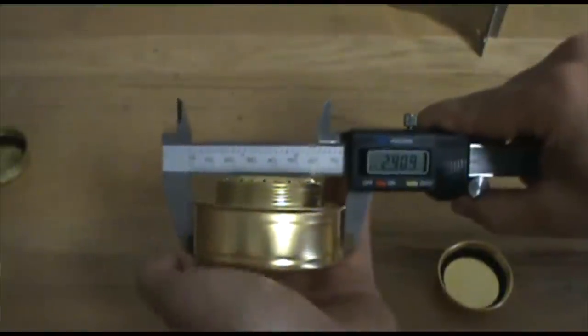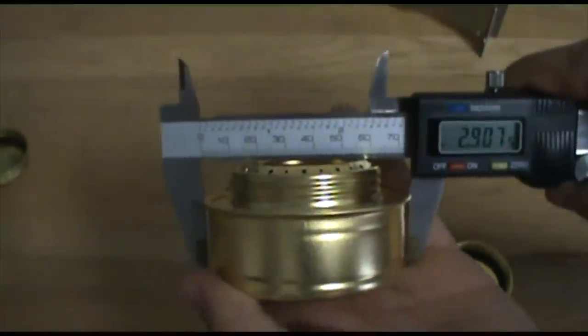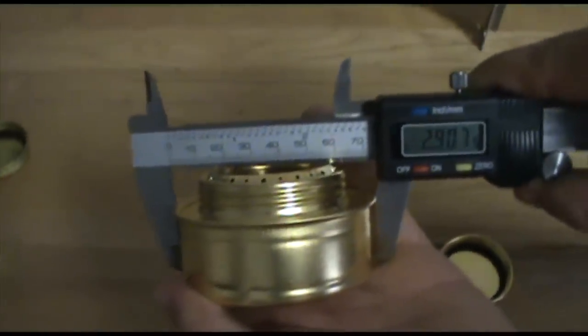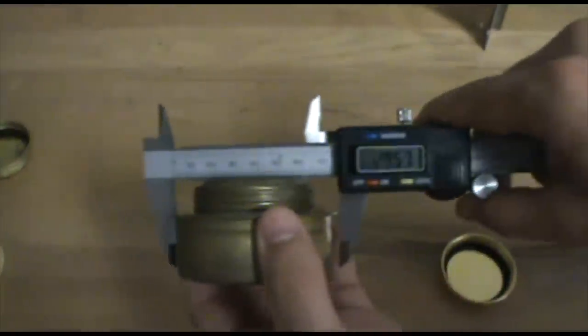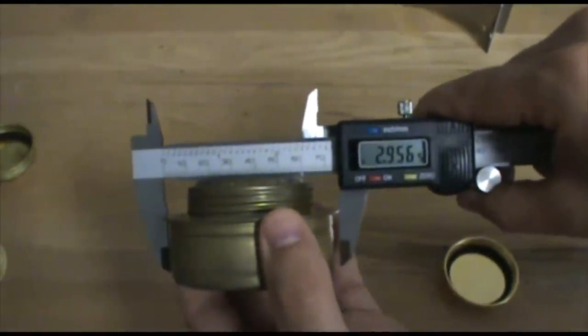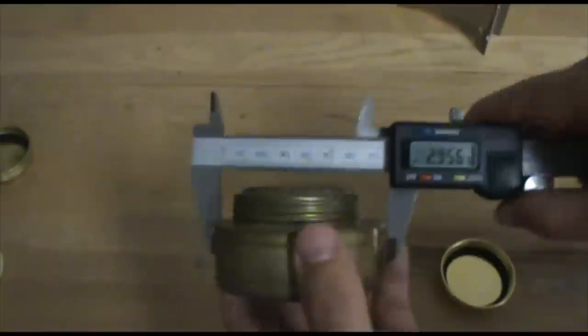The maximum diameter from basically the entire diameter of that ledge, or that little brass lip going around. 2.91 for the Esbit, 2.95 for the Trangia. Small difference there too.